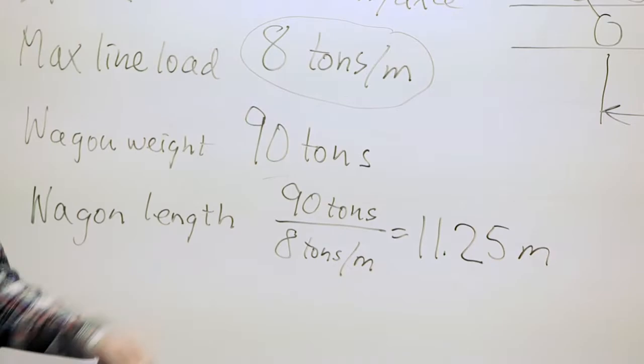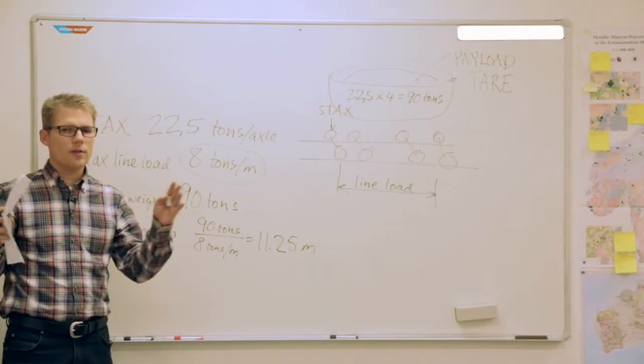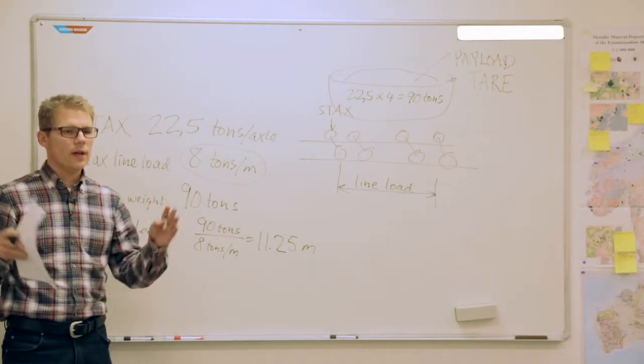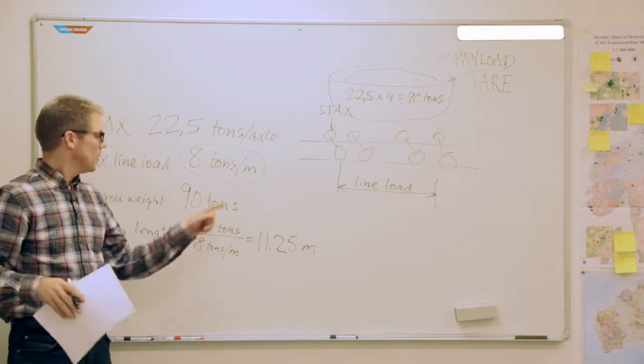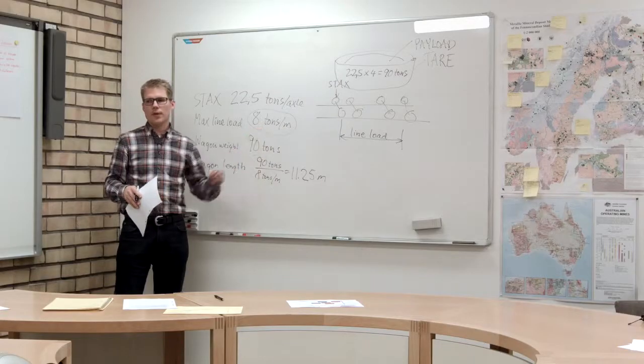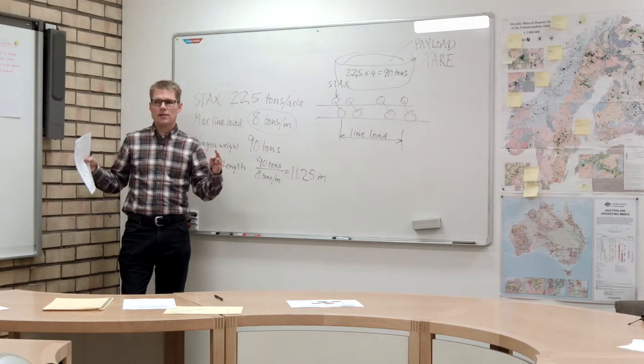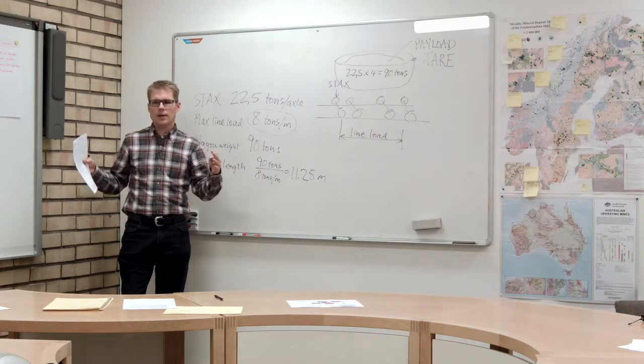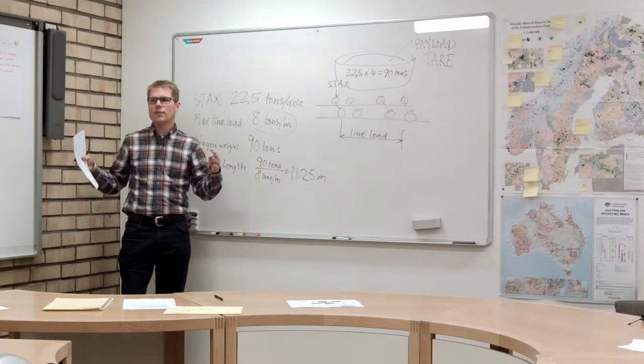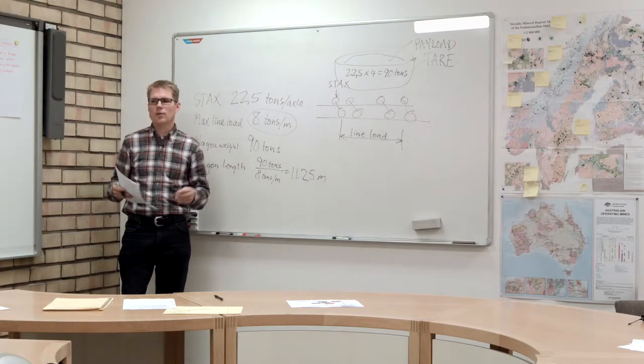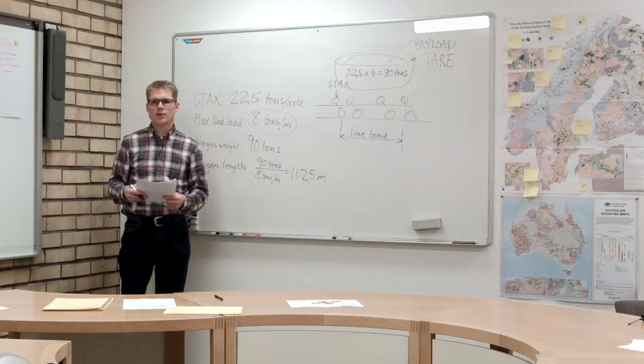That is the shortest possible length of each wagon that you can have. If it becomes shorter, then you exceed the eight tons per meter. If you make it longer, you can do that, but the wagon itself is going to be heavier the longer it gets, so you want to try to keep them as short as possible.